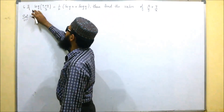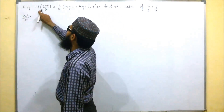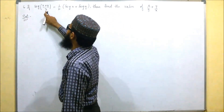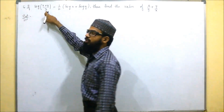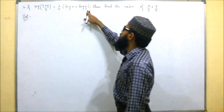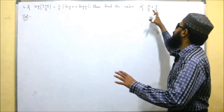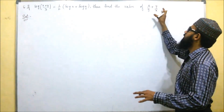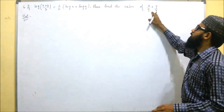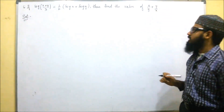This is the sixth problem. In this they said that log((x + y)/3) equals half log x plus log y. This is given. We have to find the value of x/y + y/x.